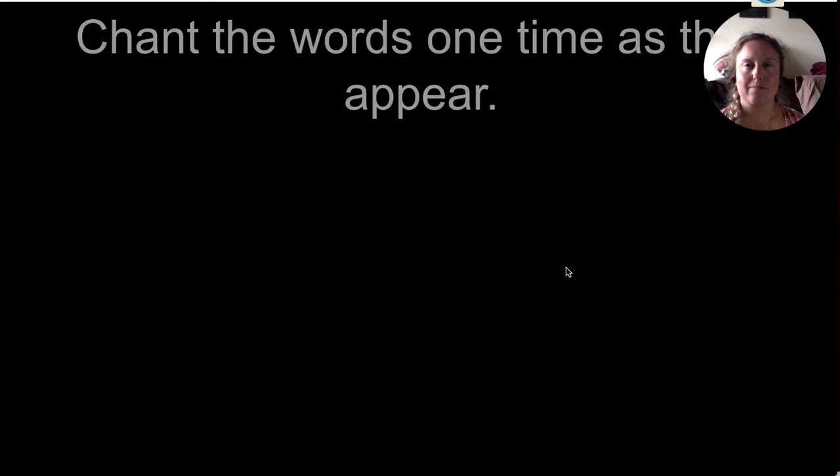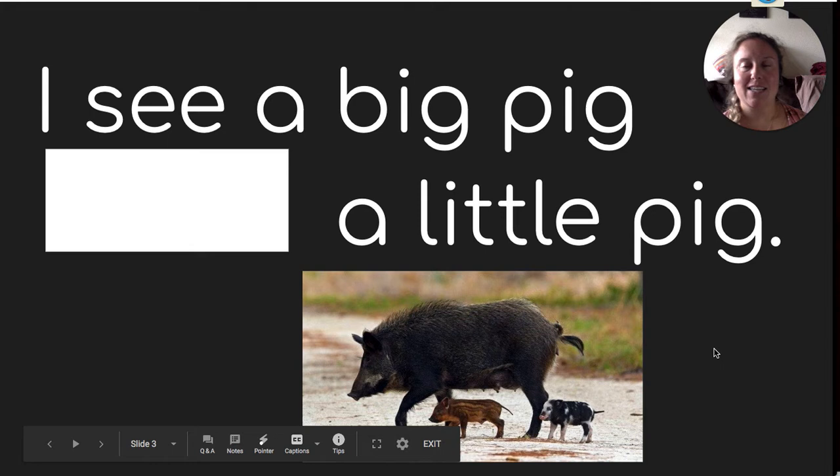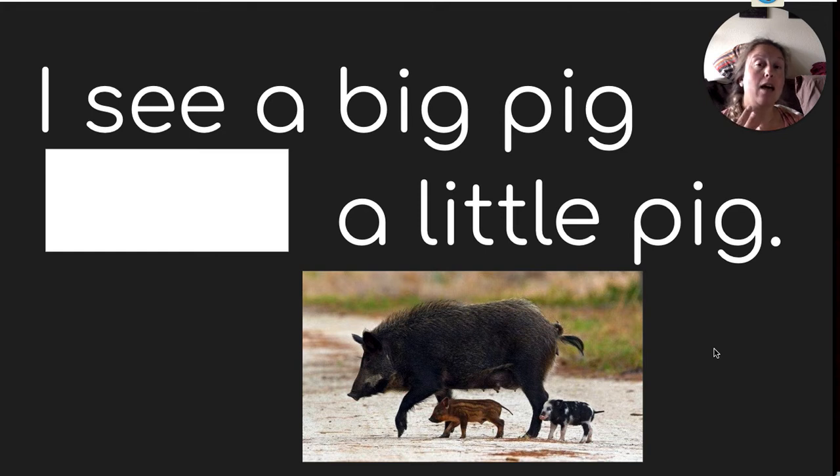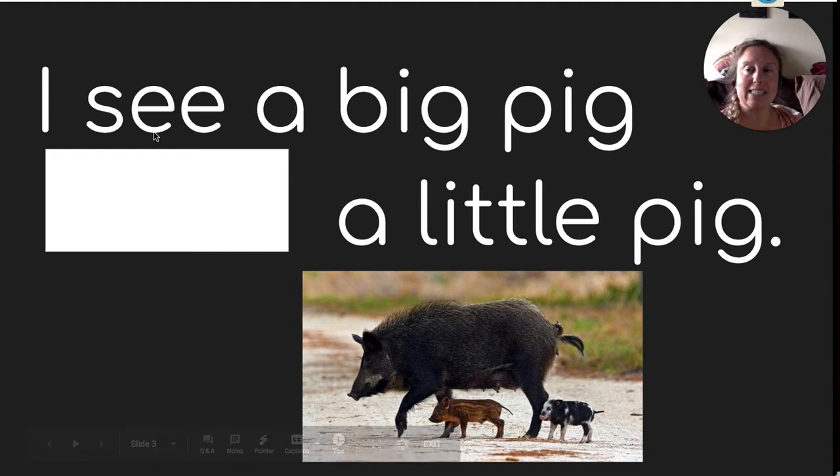Pig in a Wig. Chant the words one time as they appear. Ready? Take. Up. And. Now we have a sentence. So what I'd like you to do is to read the sentence, and then try to think of which word fits in there. Is it take, up, or and? Pause me now so you can read the sentence. Use the picture to help you. I see a big pig blank a little pig.